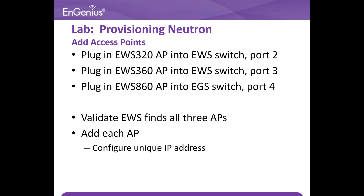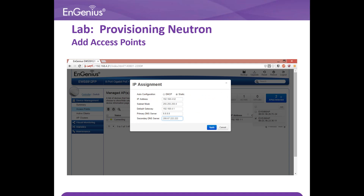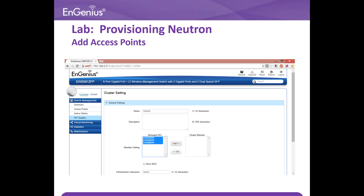Now plug in the following AP into the designated port as shown on the slide. Validate EWS controller switch to find all 3 APs and add the AP with the unique IP address. This is the validating page of the EWS controller switch as it shows the 3 APs that it has detected. Add the APs one by one and assign the unique IP address as required by the lab based on slide 3. This page shows how you add the AP to the AP group.